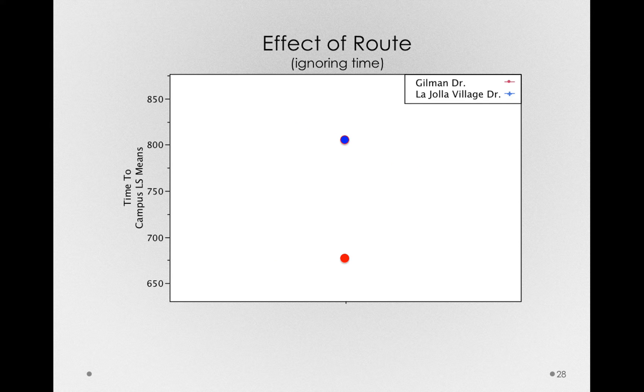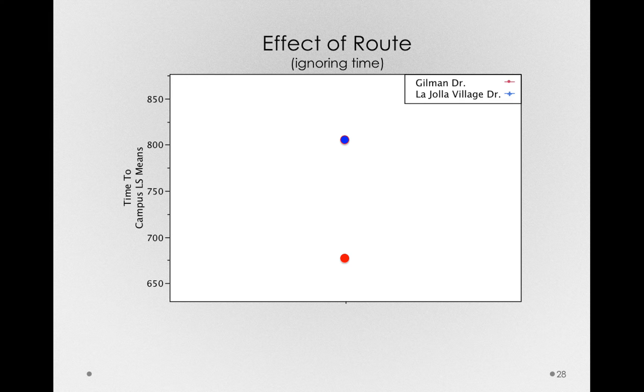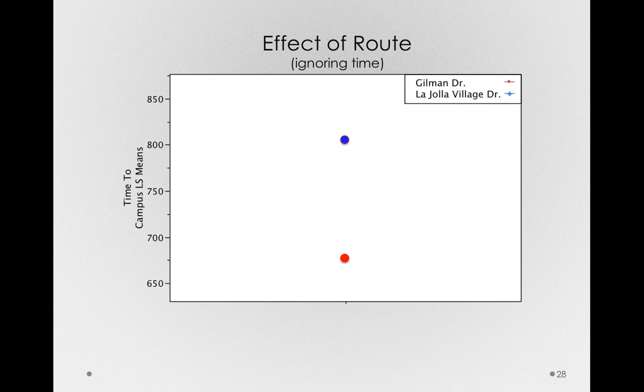That is, if I ignore time, and here it is ignoring time, we can see that La Jolla Village Drive had a longer duration on average than Gilman Drive. This is literally the effect of route ignoring time.